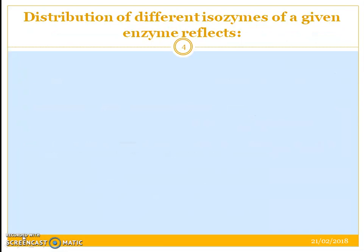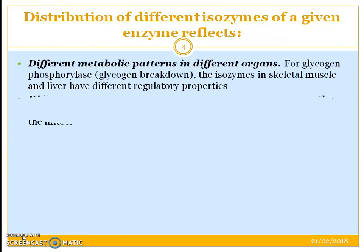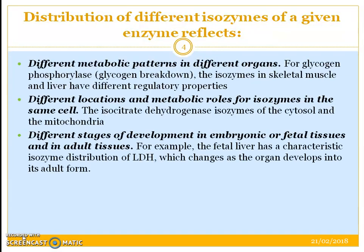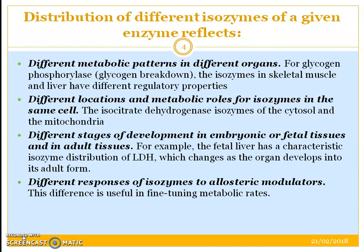How is the distribution of different isoenzymes of a given enzyme — what does it reflect? There are four possibilities. Namely, different metabolic patterns in different organs. For example, glycogen phosphorylase, which is responsible for breaking down glycogen, has isozymes in skeletal muscle and liver with different regulatory properties. Additionally, different locations and metabolic roles for isozymes in the same cell — for example, isocitrate dehydrogenase isozymes of the cytosol and mitochondria have different metabolic roles.